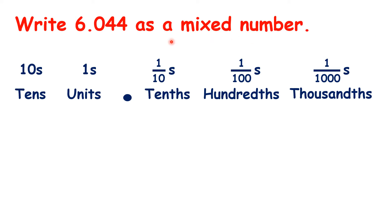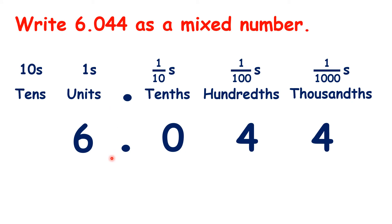But here it gets more difficult. How can we write 6.044 as a mixed number? We have 6 units, no tenths, four hundredths, and four thousandths. Remember, the fraction of the mixed number is always the smallest place value that you have — the place value furthest to the right. So, that's our thousandths. Our mixed number is 6 and 44 thousandths.